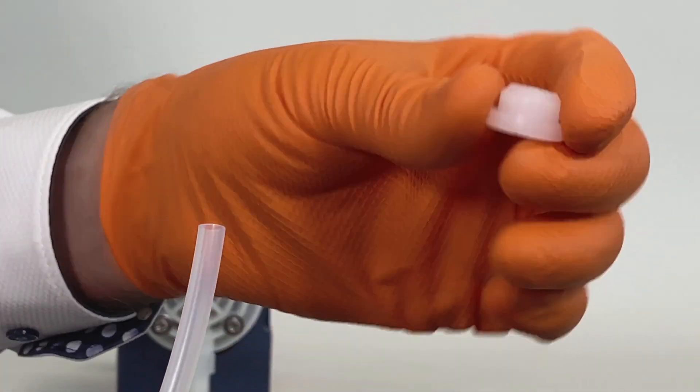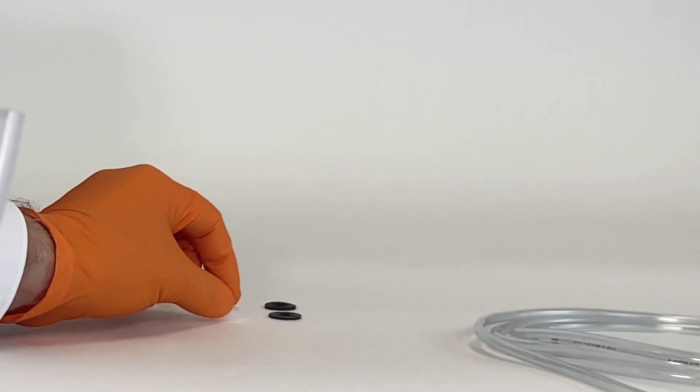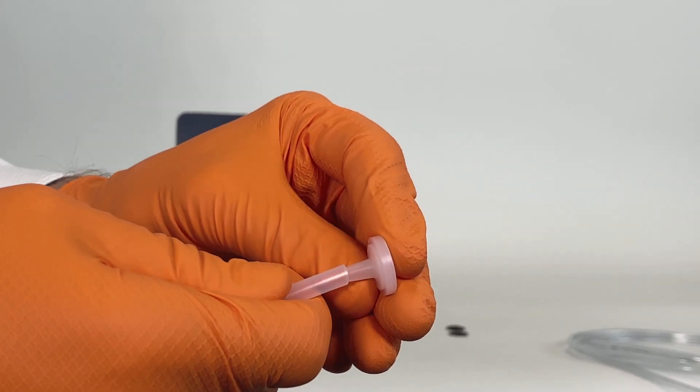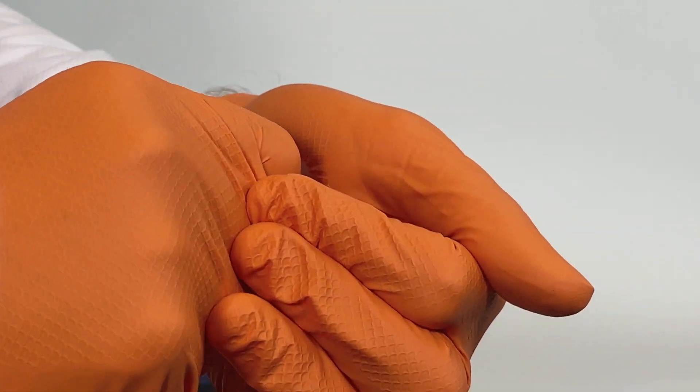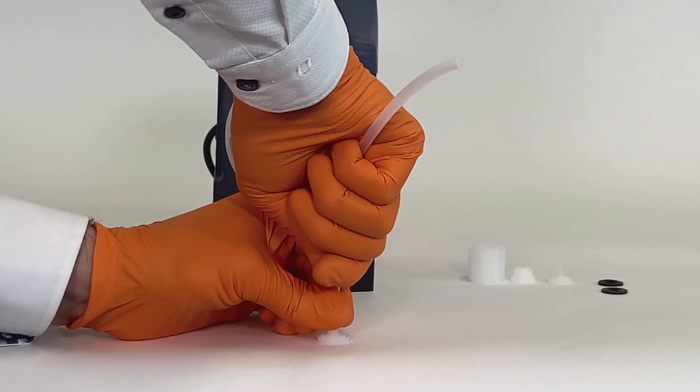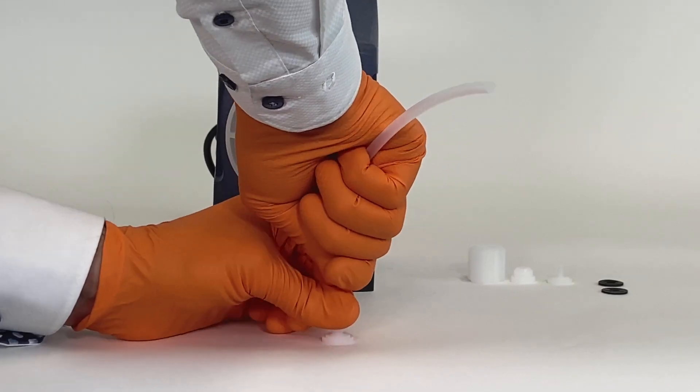After that, push the nozzle completely into the tube. You can use a wall or a table to push the nozzle properly into the tube.